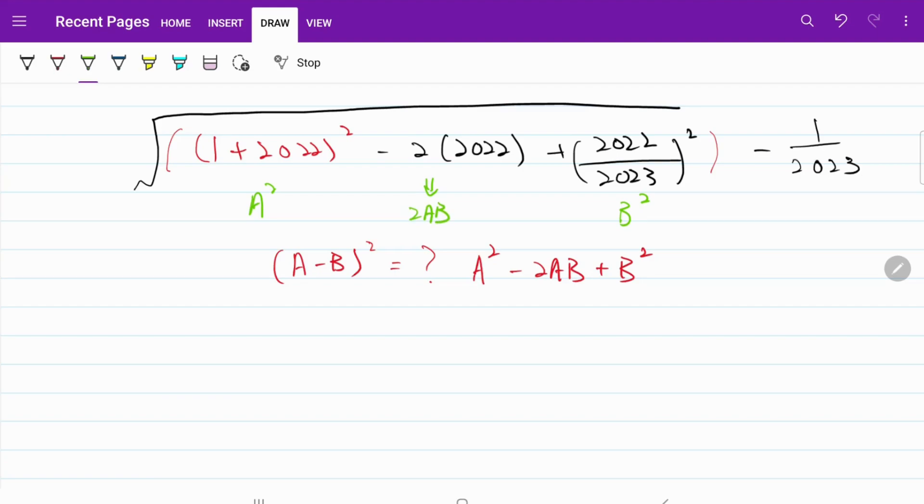And we can do that by just simply multiplying this with the fraction of 2023 over 2023. Of course, this fraction is equal to 1. And if you multiply something by 1, you have not changed it in any way.